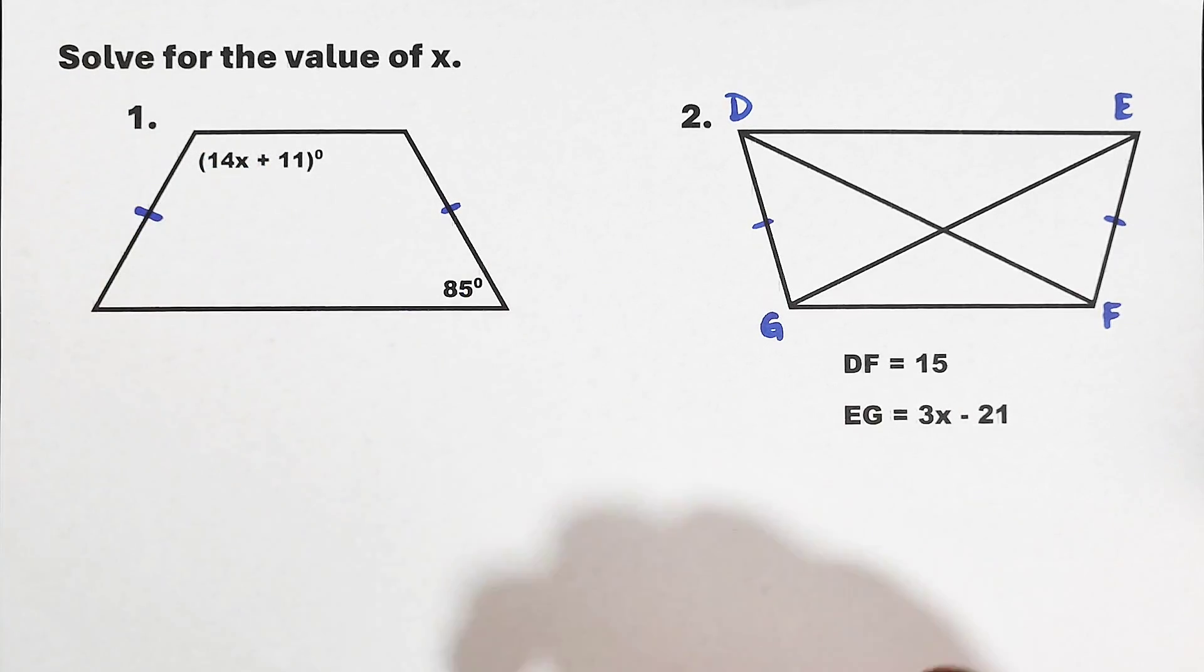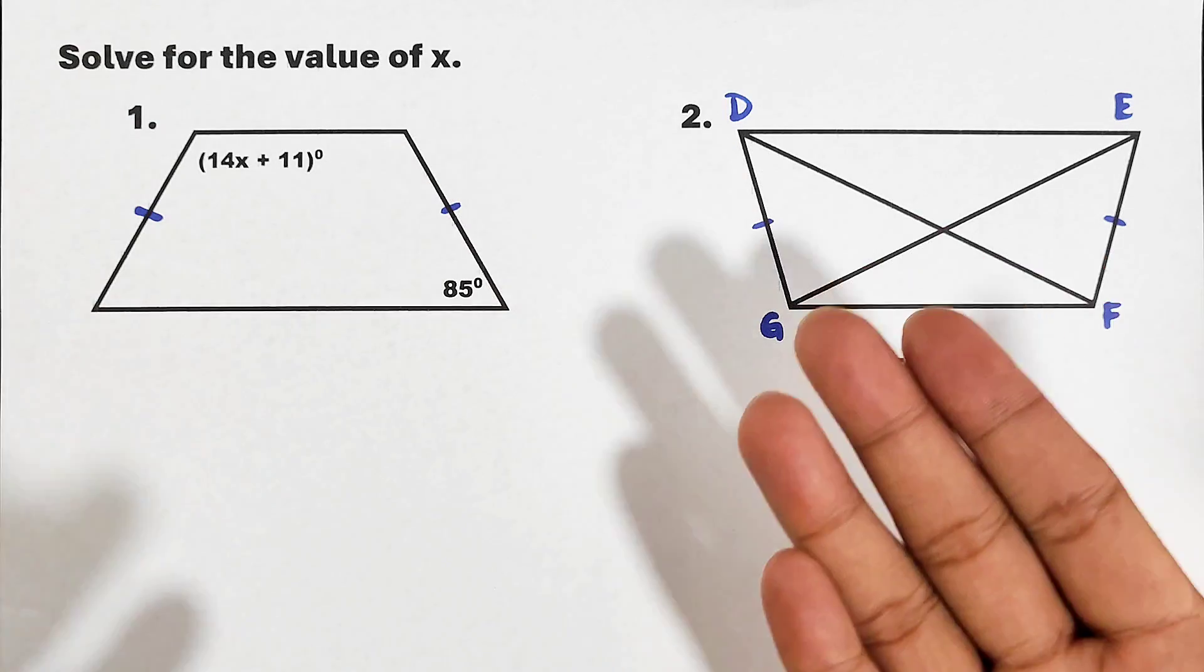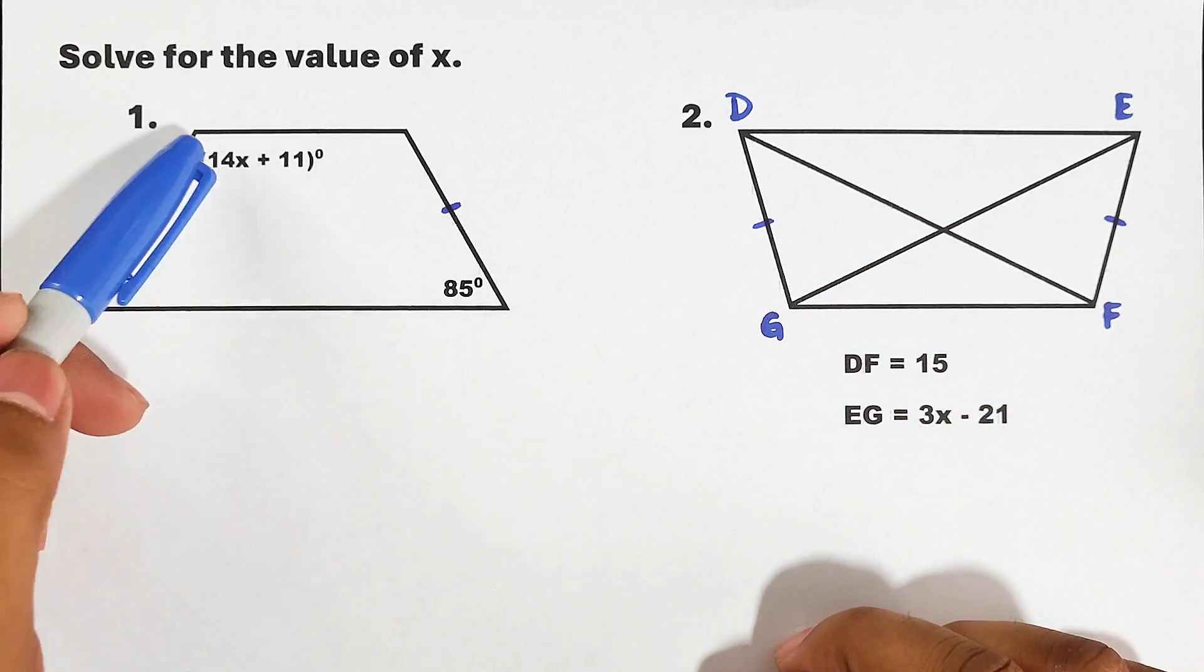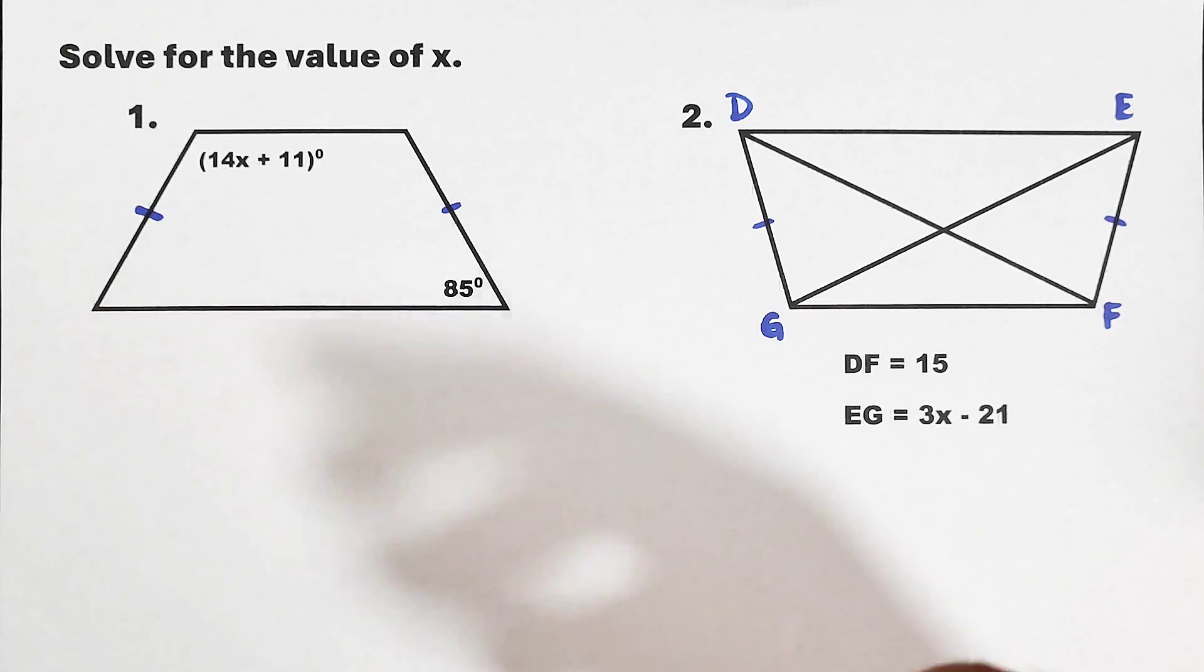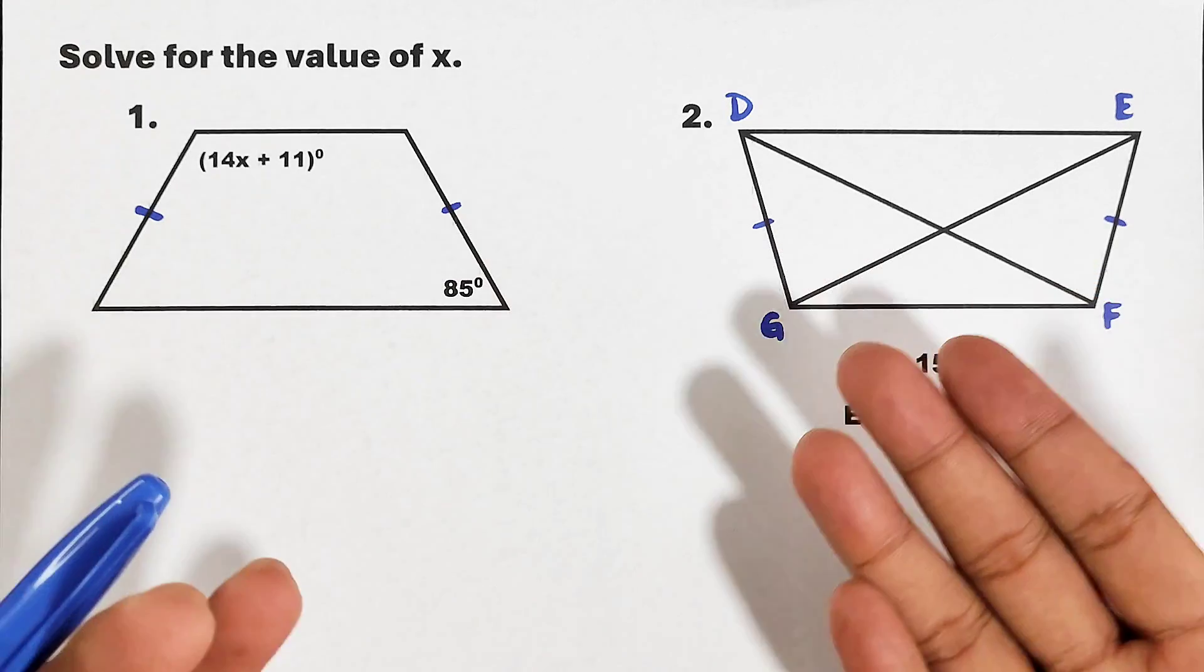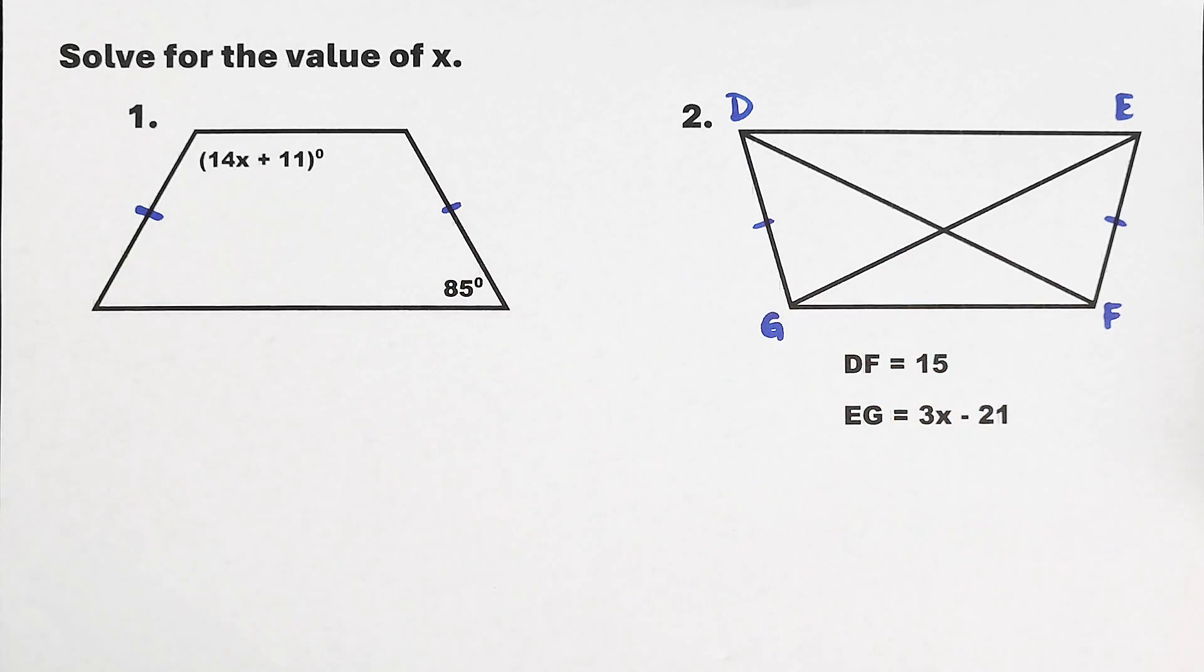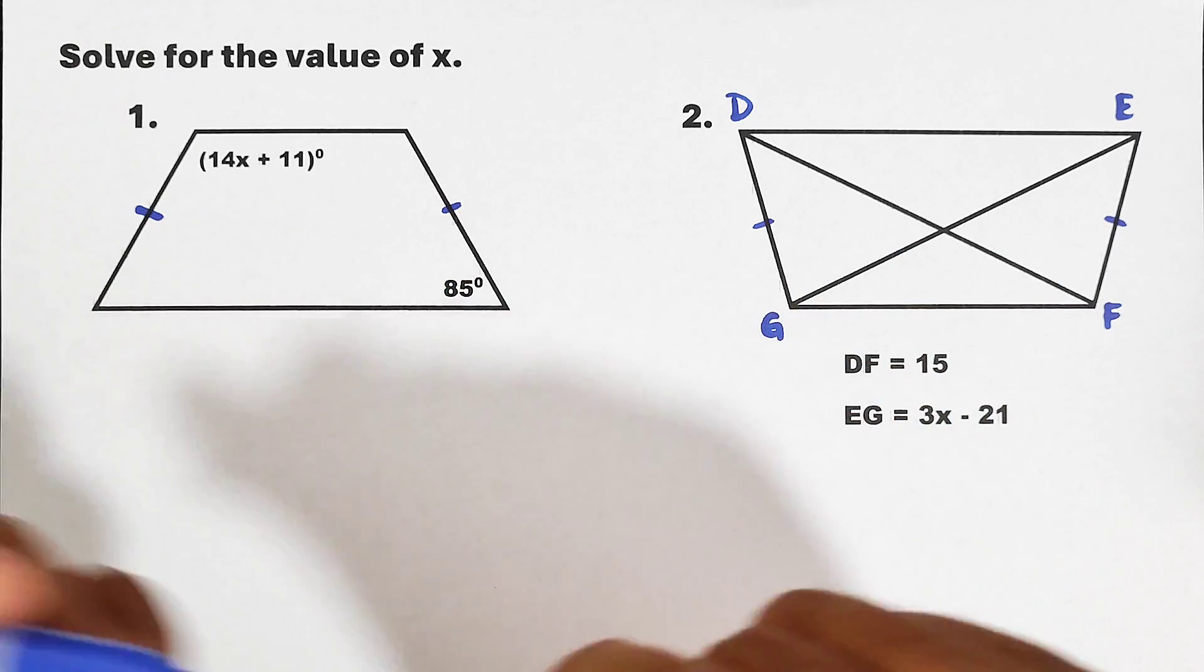These angles are called opposite angles, and we know that in an isosceles trapezoid, opposite angles are supplementary. It simply means that when we add them, they add up to 180 degrees.